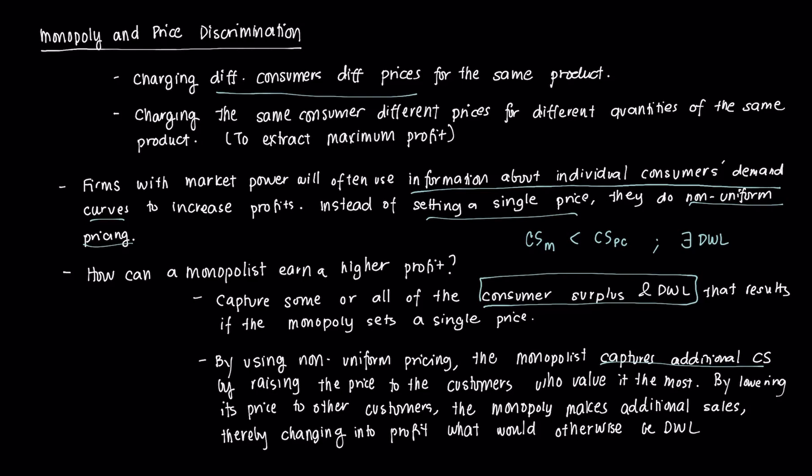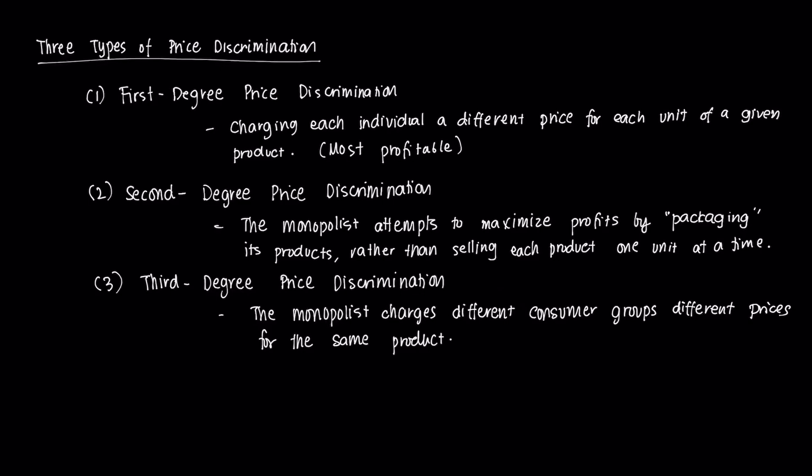We're going to tackle three main types of price discrimination. The first type is called first-degree price discrimination, or what we often refer to as perfect price discrimination. It's essentially charging each individual a different price for each unit of a given product, and it's the most profitable of the three. If you know the maximum willingness to pay of each of your consumers, then you charge them exactly that, so they have no consumer surplus.